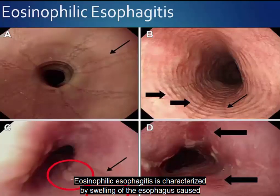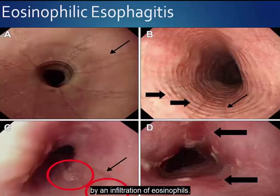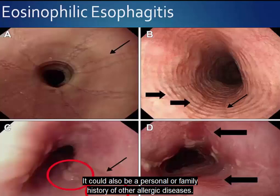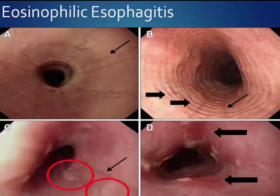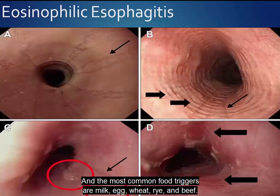Eosinophilic esophagitis is characterized by swelling of the esophagus caused by an infiltration of eosinophils. There could also be a personal or family history of other allergic diseases, and the most common food triggers are milk, egg, wheat, rye, and beef.